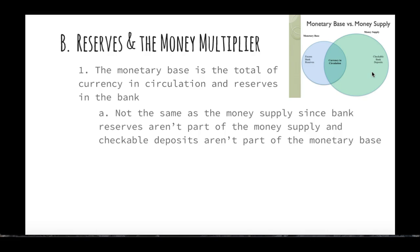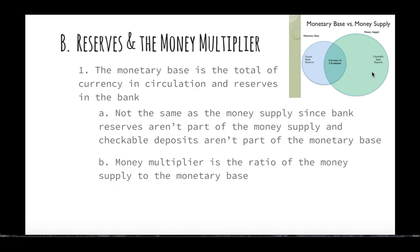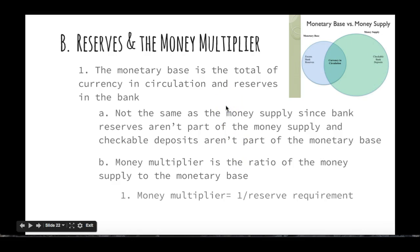When we are adding to the monetary base in the form of reserves, that does mean we have the potential to add to the money supply. The money multiplier is the ratio of the money supply to the monetary base. To figure out what the money multiplier is, the multiplier will be 1 over whatever the reserve requirement is. Most commonly, for example, the reserve requirement is 10%, so it's 1 over 0.10, and the money multiplier is going to be 10.